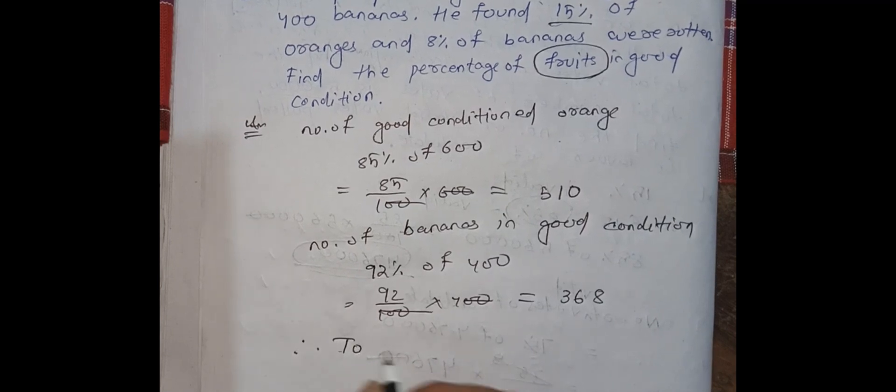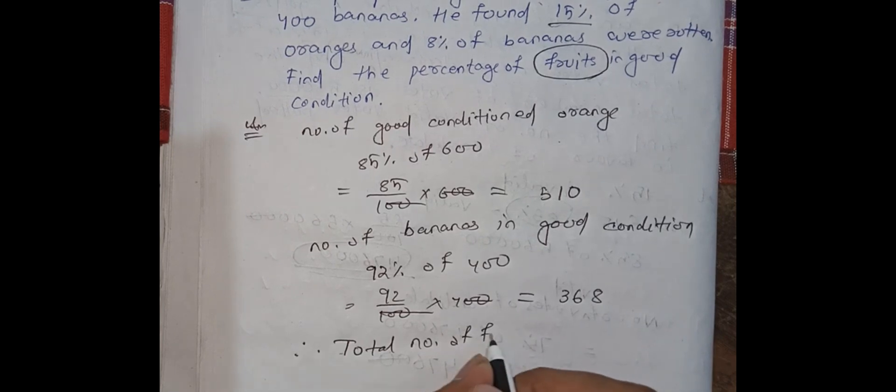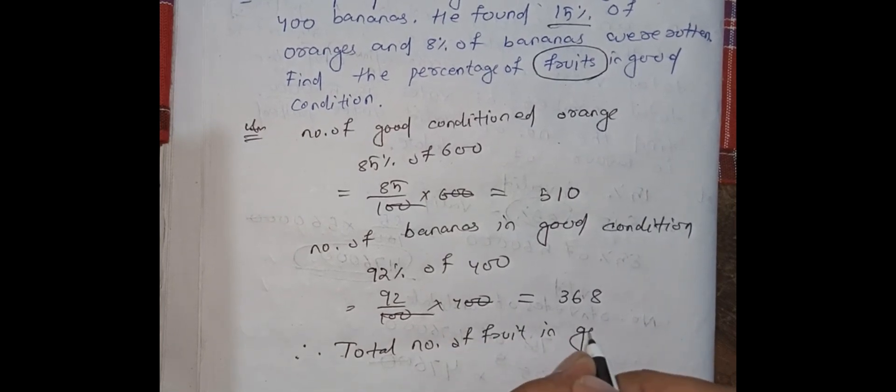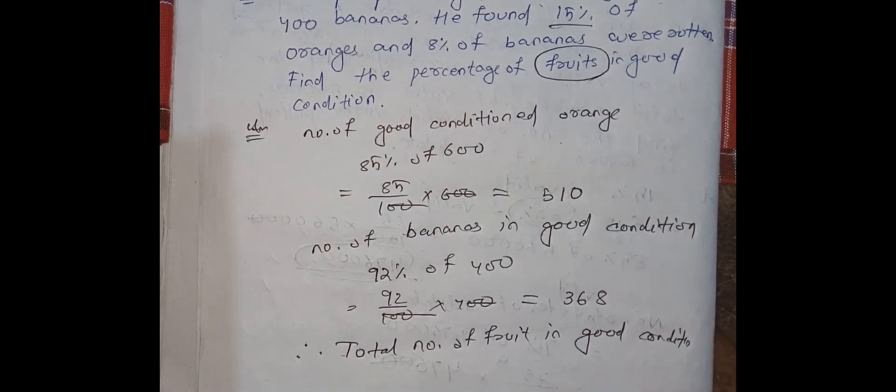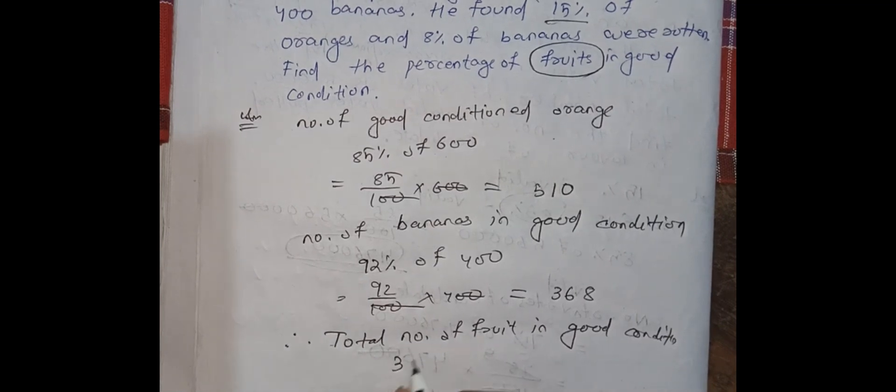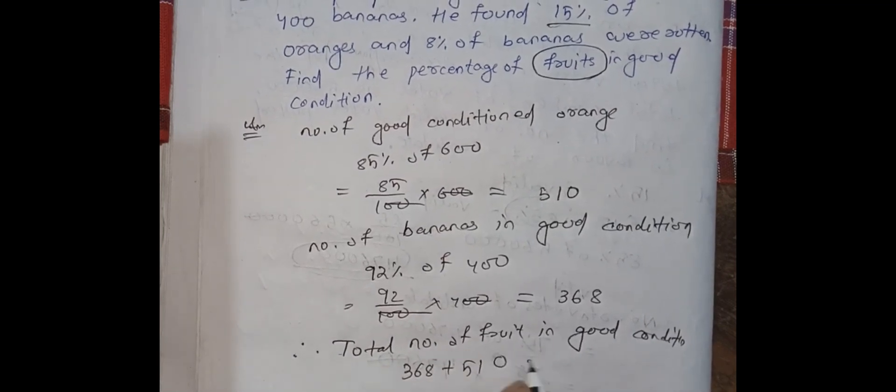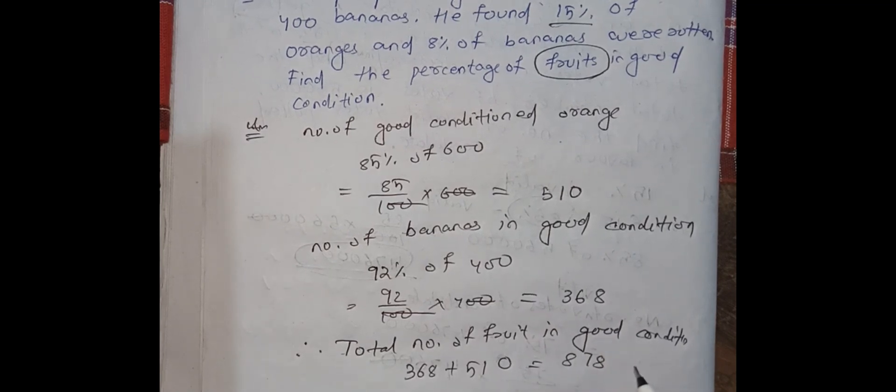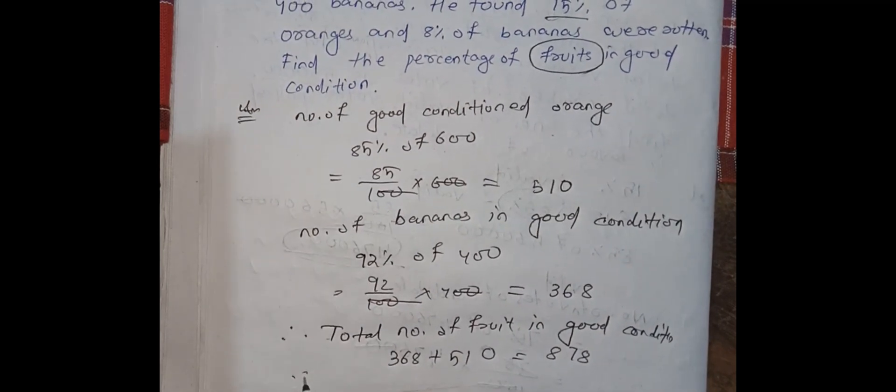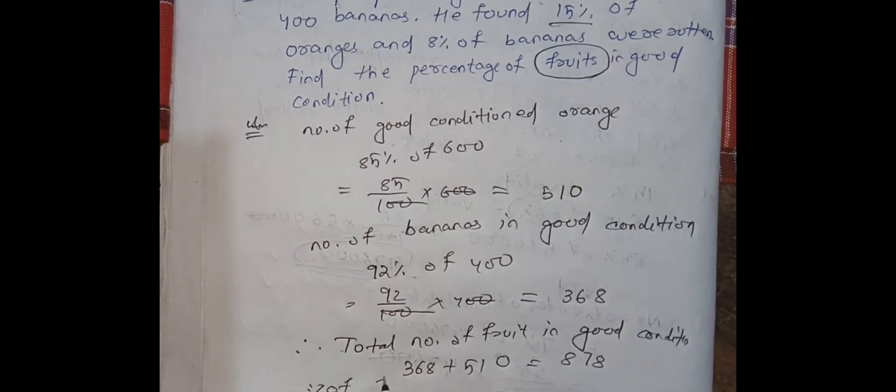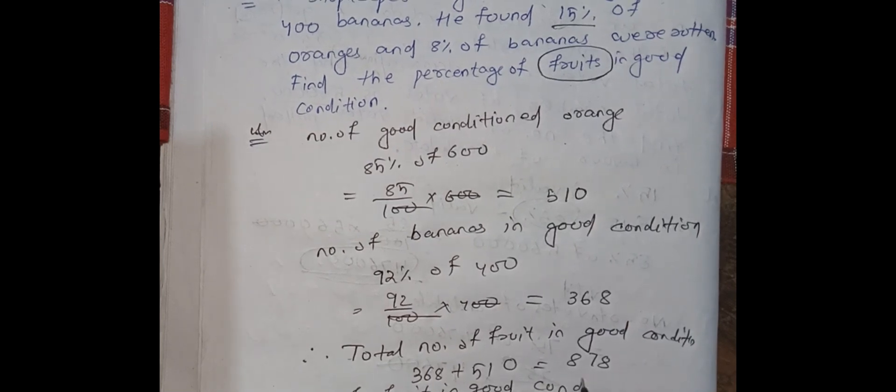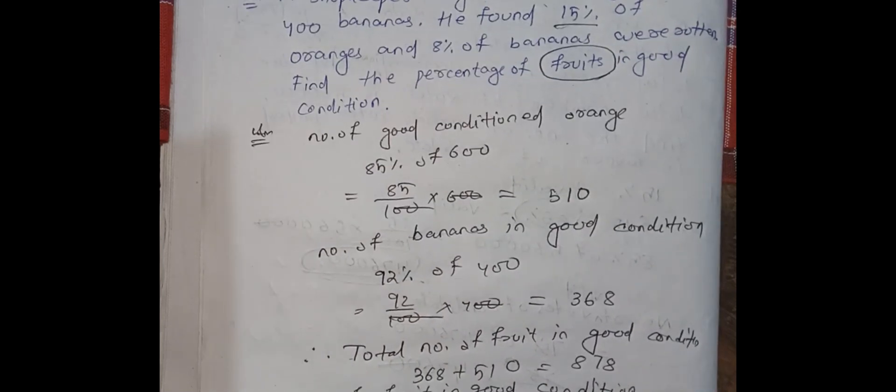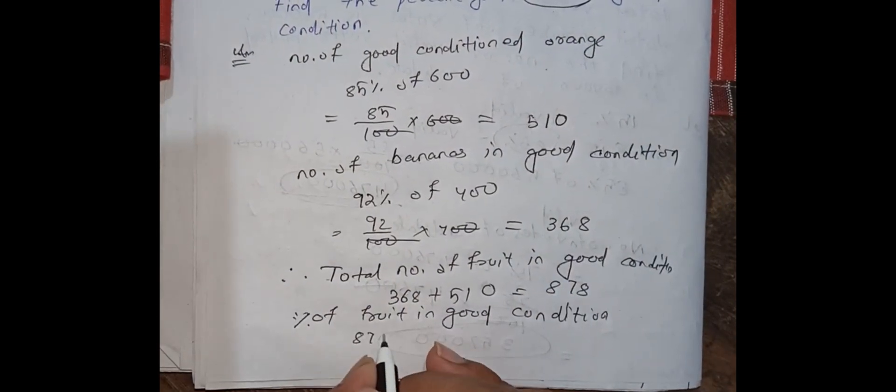So therefore, total number of fruit in good condition: the total number of fruits in good condition will be 368 plus 510, that will be 878. So the percent of fruit in good condition, how will you find? You will find the number of fruits in good condition, that's 878.